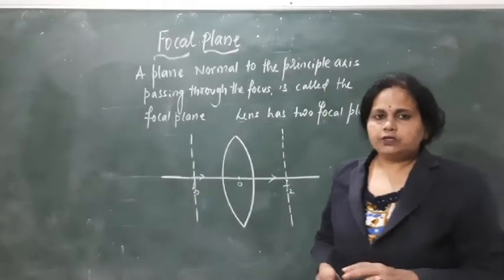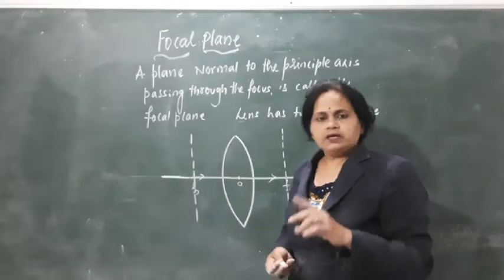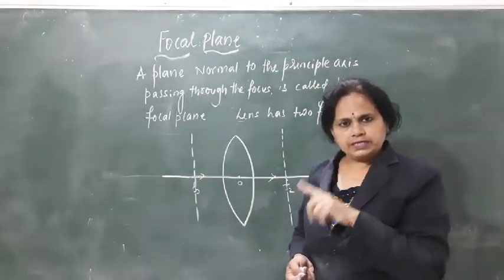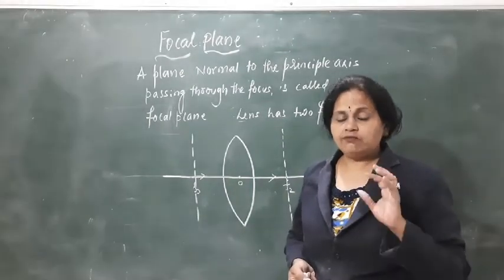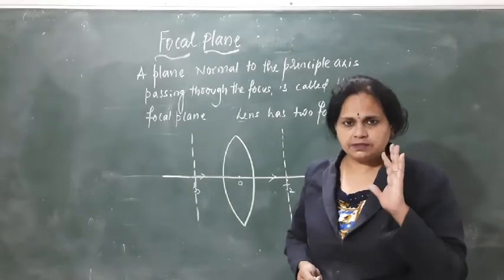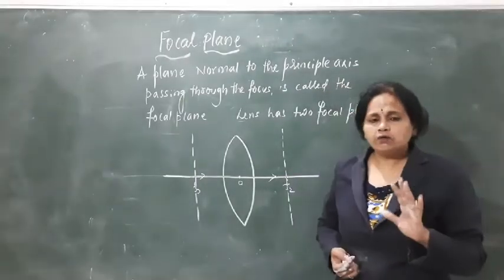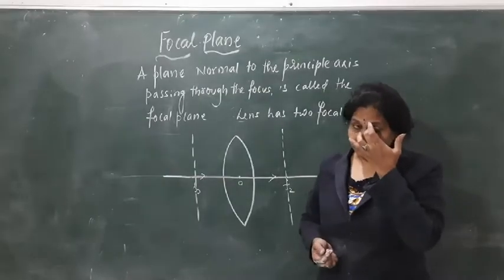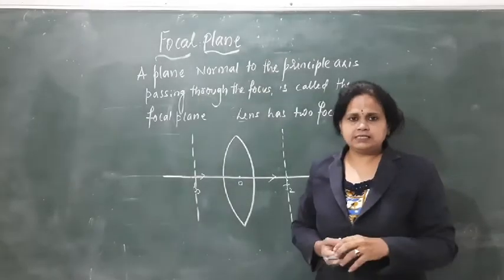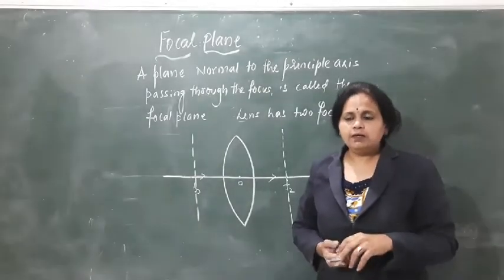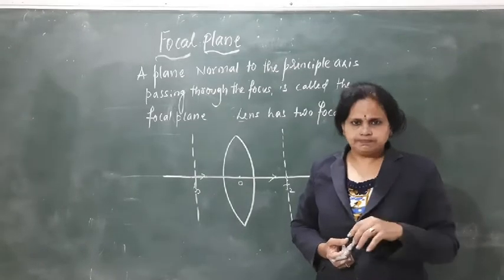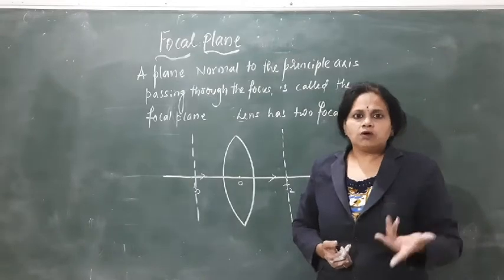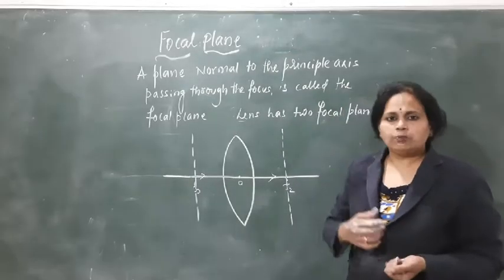Now we will understand focal plane. After understanding the position of F2 for convex lens and concave lens, and in which plane it lies, we will now understand about the focal planes for the lens. First we will understand what exactly is a plane — you can say it is the area, or the place is called as a plane in very normal language.